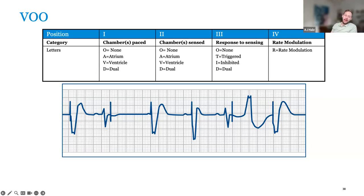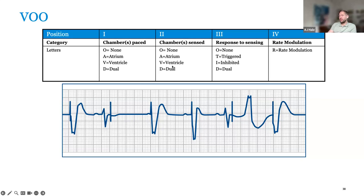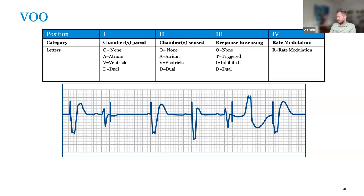VVI paces in the ventricle, senses in the ventricle, and based on a sensed event, inhibits pacing. VVT is similar — paces in the ventricle, senses in the ventricle — but based on intrinsic ventricular activity it triggers a pace. For patients where you want VVI pacing all the time, you can turn on VVT to allow the device, when it senses an intrinsic event, to pace into it — potentially achieving some degree of fusion.